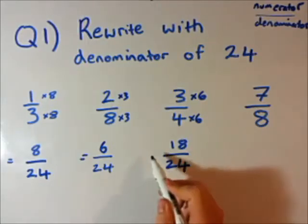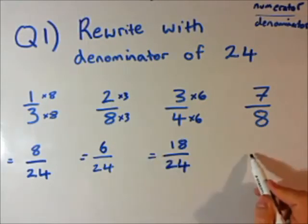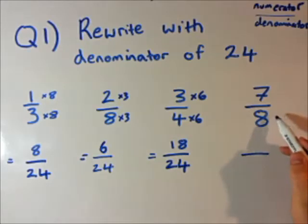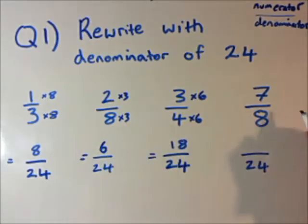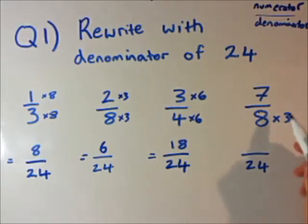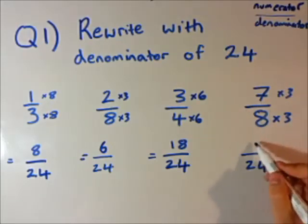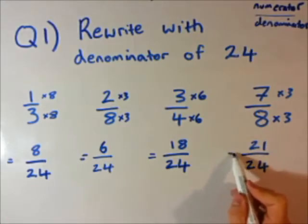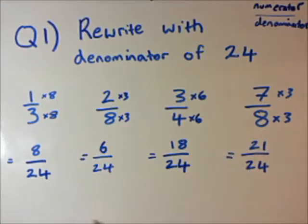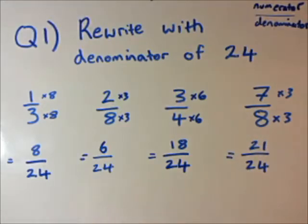Last one. We have the denominator 24 again. Similar to the second one, I'm going to times that by 3. So I'm also going to times the top by 3. 7 by 3 is 21. So now I've got these 4 fractions written with the denominator, or the bottom, as 24.